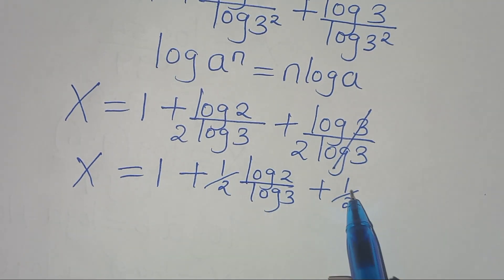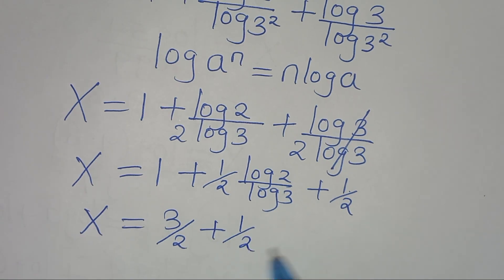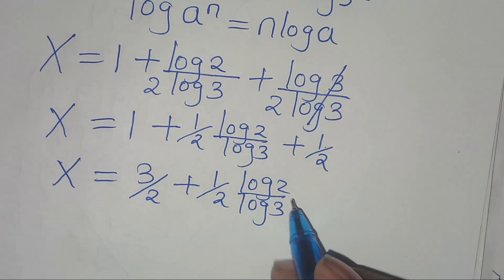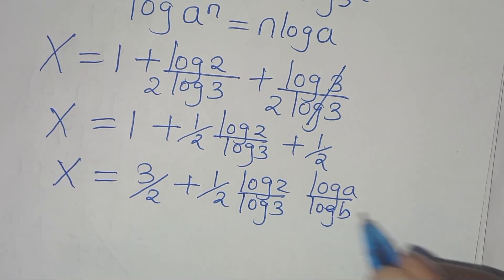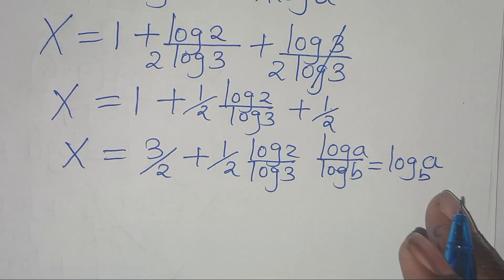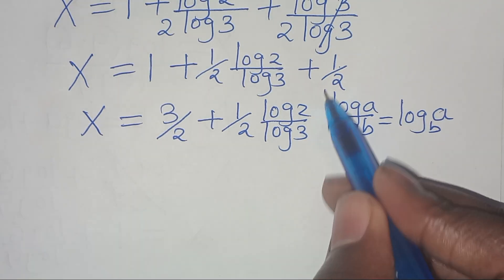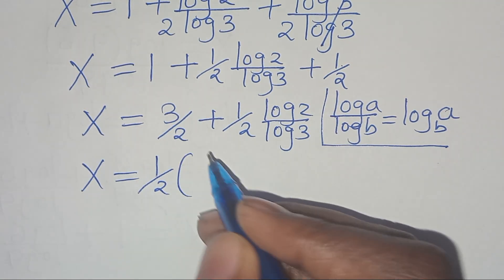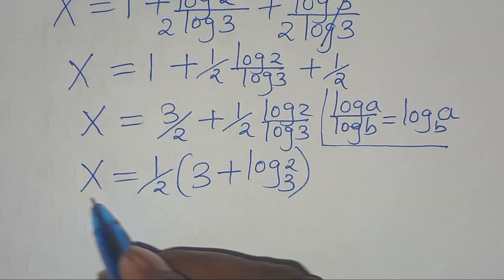We have 1 plus 1 half, so this implies that x is equal to 3 over 2, then plus 1 half times log 2 over log 3. Now log 2 over log 3 is in the form of log A over log B, which can be expressed as log A to base B. Applying this change-of-base property, x is equal to one half into the parenthesis, we have 3 plus log 2 to base 3. Now this is the value of x.